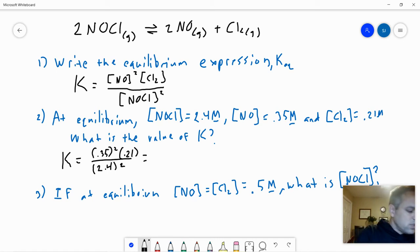We plug this into our trusty calculator. 0.35 squared times 0.21 divided by 2.4 squared equals 4.5 times 10 to the negative third. So that is our value of K. And we only are going to go to two significant figures based off of the data we've been given.